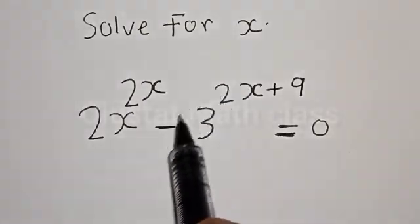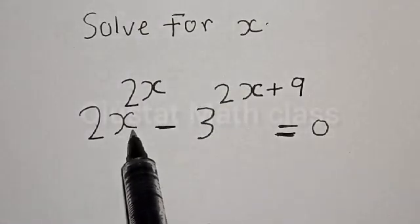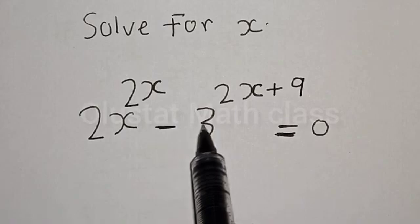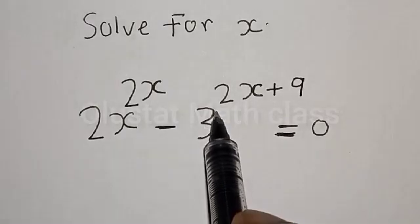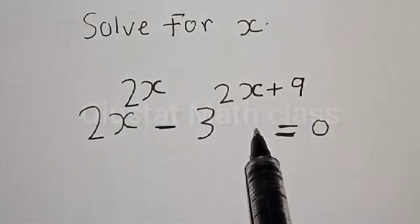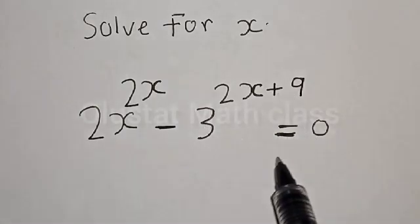Solve for s. The equation is: 2s raised to power 2s minus 3 raised to power 2s plus 9 is equal to 0.